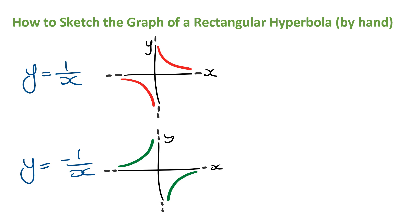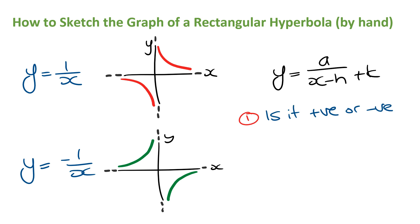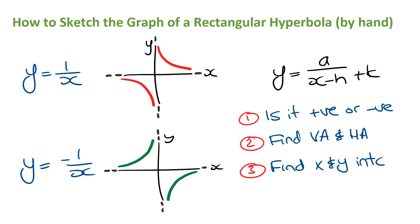In general, our hyperbola rule will be in the form y is equal to a on x minus h plus k, where the value of a will dilate the graph, the value of h will tell us where the vertical asymptote is, and the value of k will tell us where the horizontal asymptote is. Here are the four steps you need to take when sketching a hyperbola: first, determine whether it's a positive or a negative hyperbola; second, work out the equations of the vertical and horizontal asymptotes; third, find the x and y intercepts if there are any; and finally, label these features on the axes and sketch the graph.